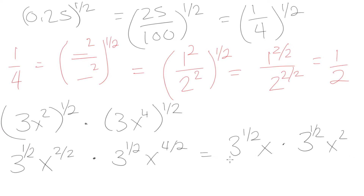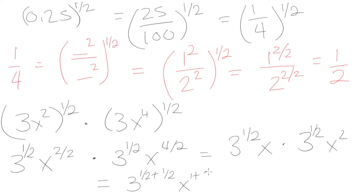We can now recognize common bases being multiplied. Applying our exponent laws, we add exponents for base 3: 1 half plus 1 half equals 1, so 3 to the power of 1 is just 3. For x, we add exponents 1 plus 2 to get x³. So the final answer is 3x cubed.